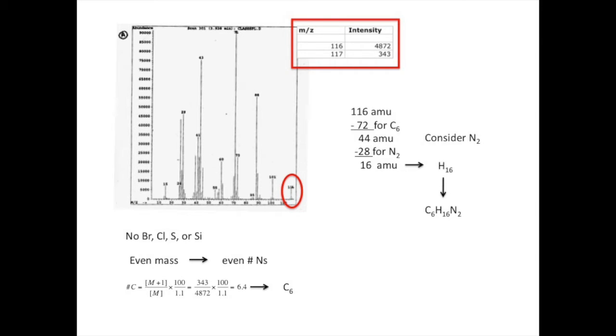Let's see if we get a reasonable number for the double bond equivalents or rings plus double bonds. Well, it turns out we get 0. That's a reasonable number. It means that we have an entirely saturated molecule. We must have some sort of saturated amine.